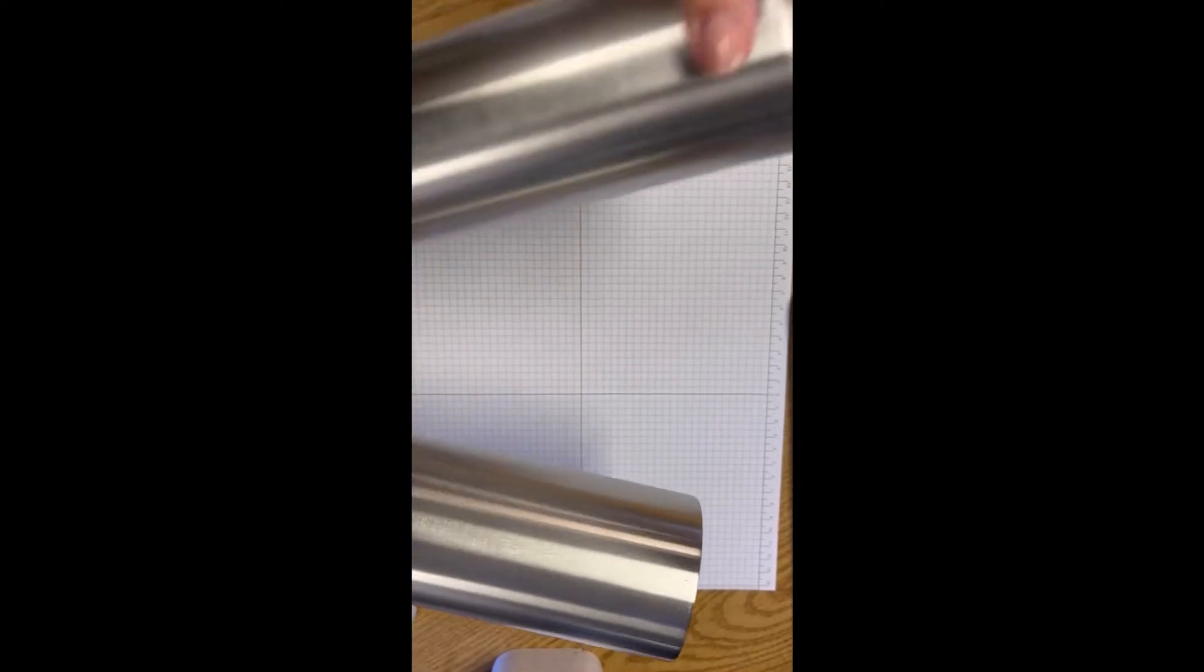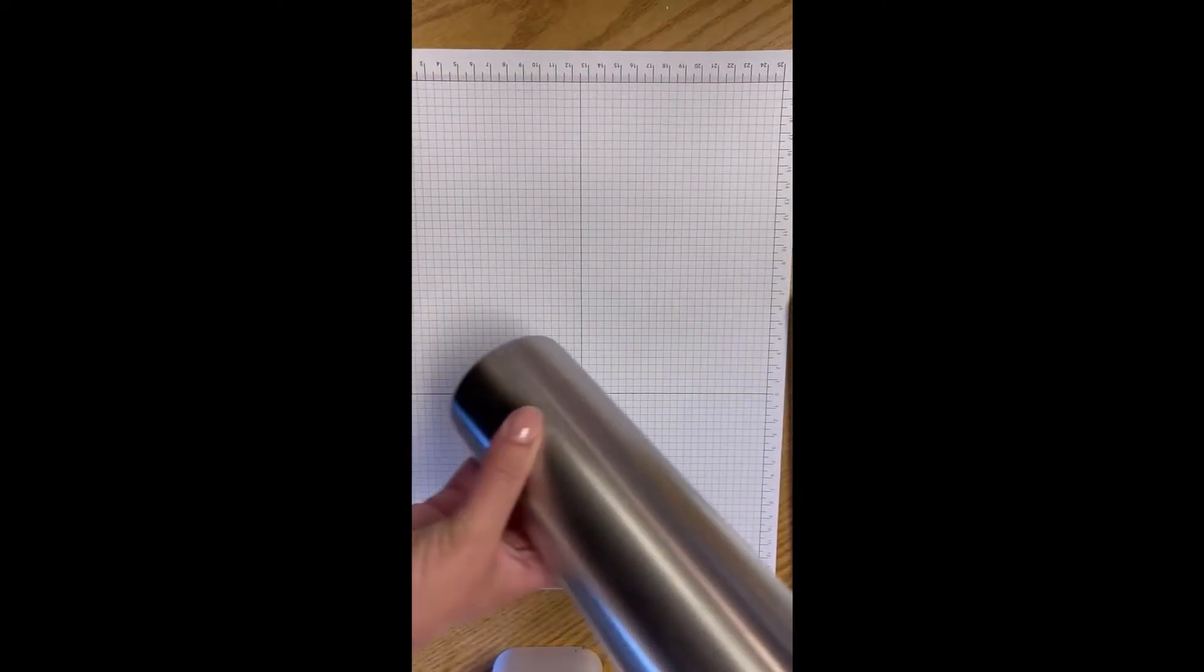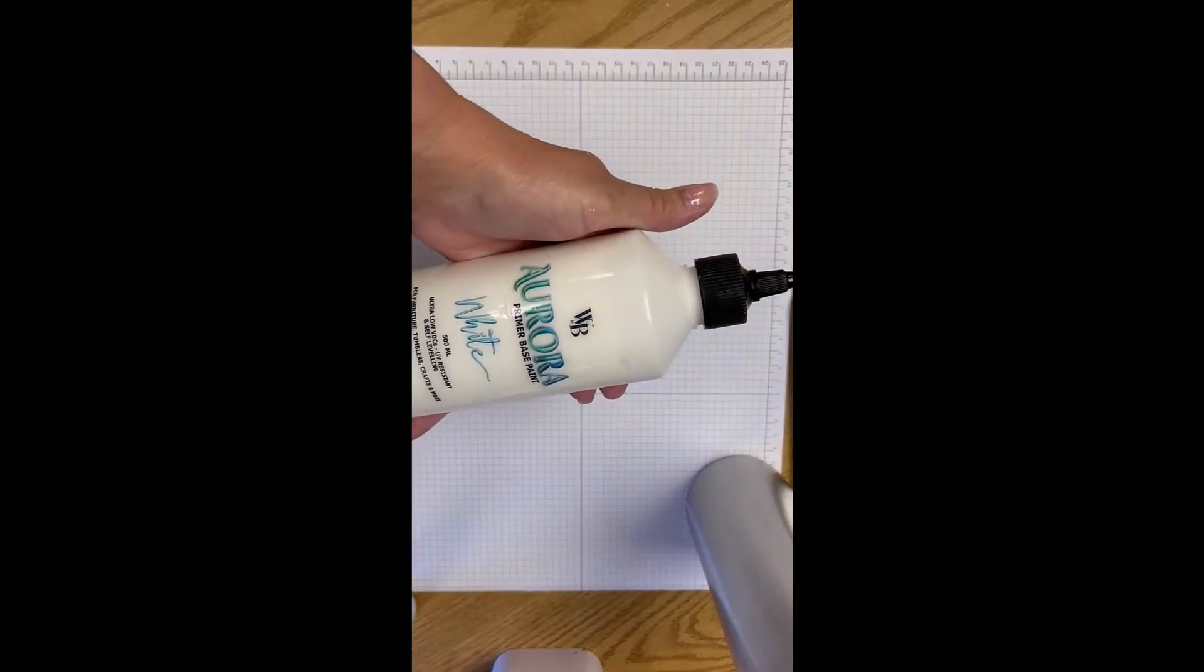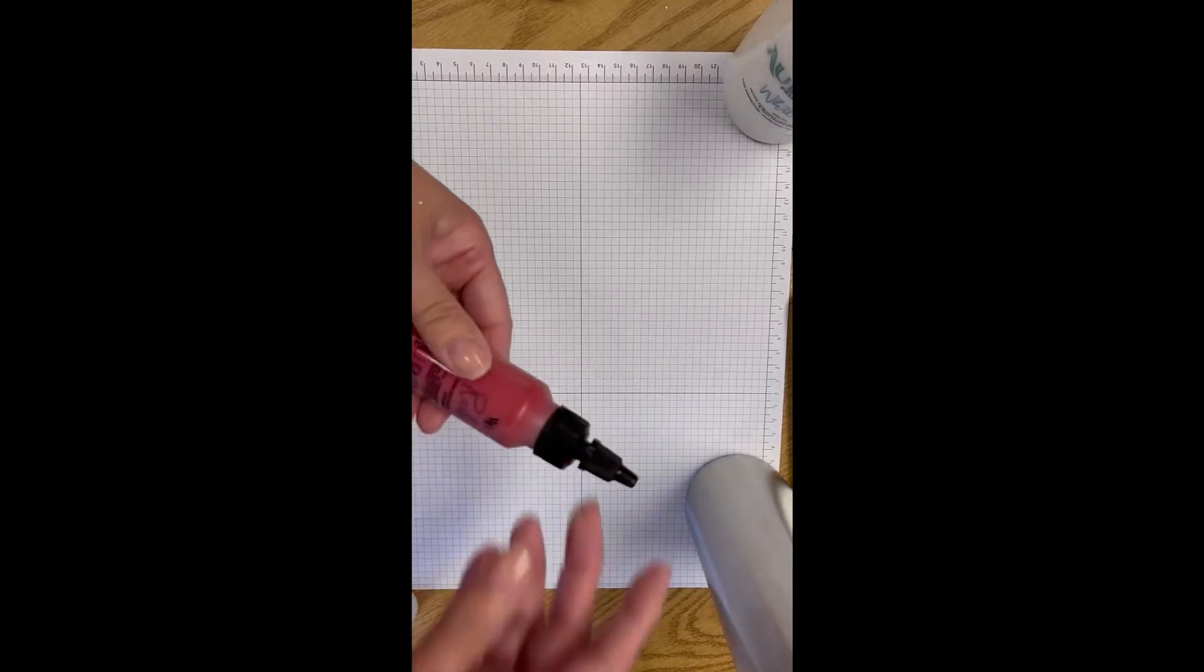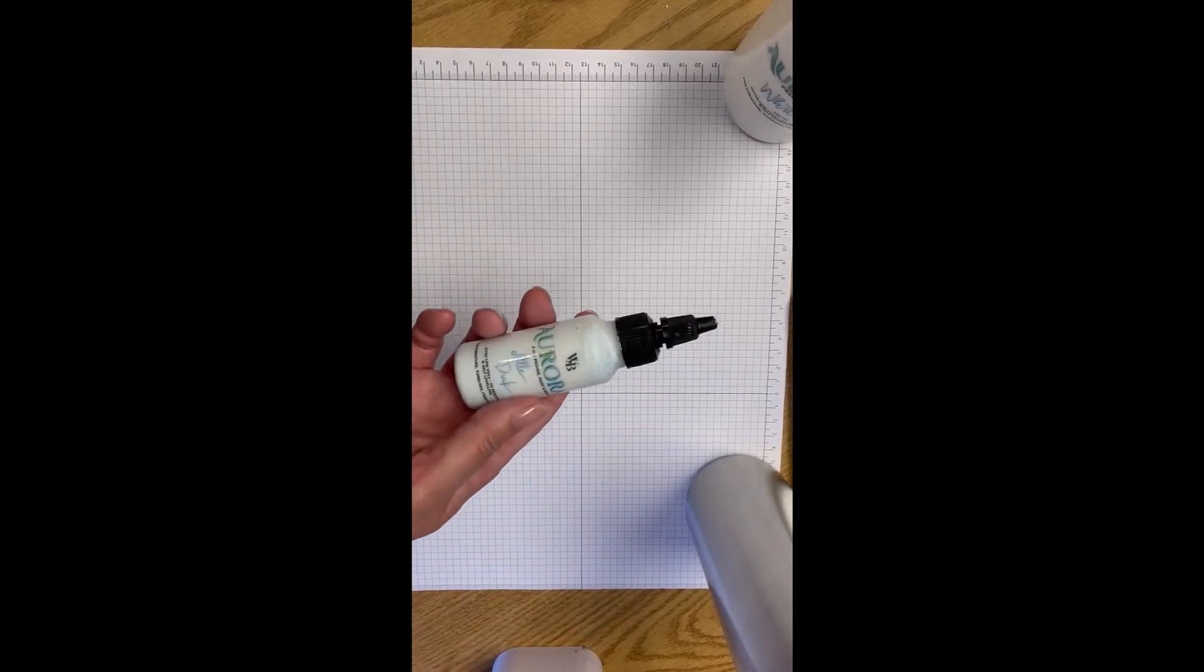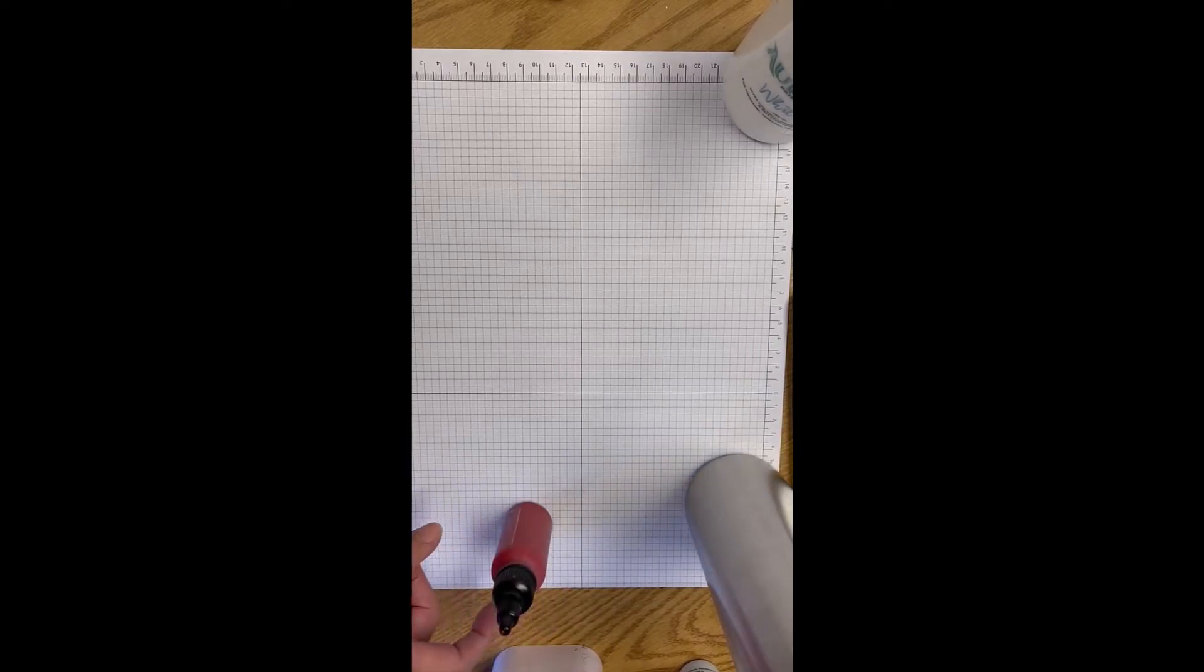Okay, I've got my tumblers here. They have passed the water test. I have two because I'm going to show you how to use both of the Aurora primer base paint with one of the pigment colors and I'm also going to show you how to use the three-in-one paint and show you what the difference is.